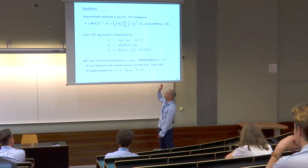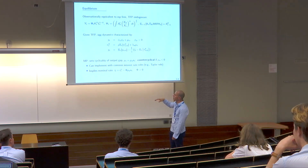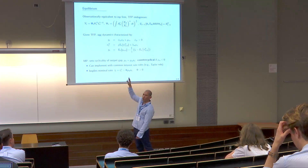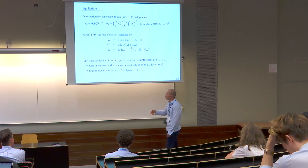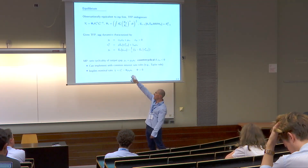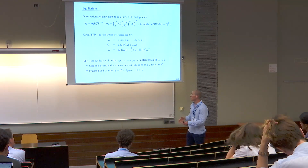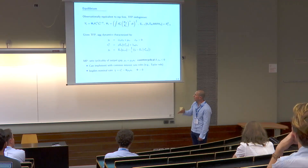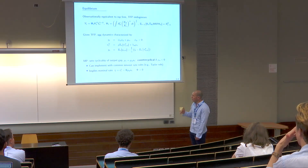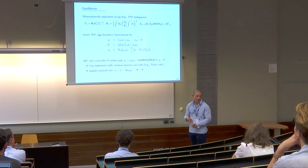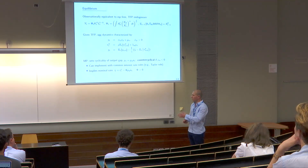In the paper we show this can be implemented with common interest rate rules like Taylor rules. The nominal interest rate equals R star — the natural rate — minus a term depending on how cyclical the output gap is. Counter-cyclical policy means a more negative elasticity of the output gap to aggregate shocks, and also a more pro-cyclical nominal interest rate — one that goes up more in booms and down more in recessions.